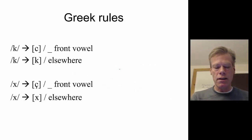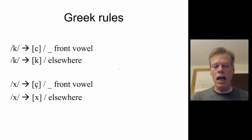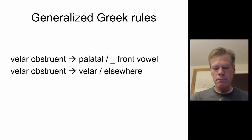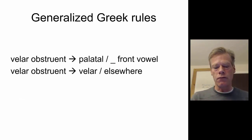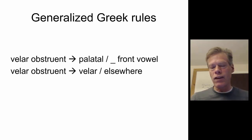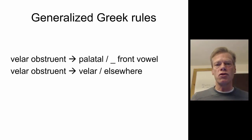This leads us to the following rules: the velar stop becomes a palatal stop when it precedes a front vowel, and is a velar stop elsewhere. Similarly, the velar fricative becomes a palatal fricative when it precedes a front vowel, and is a velar fricative elsewhere. To generalize: a velar obstruent — that is, a velar stop or velar fricative — becomes palatal when it precedes a front vowel, and remains velar elsewhere.